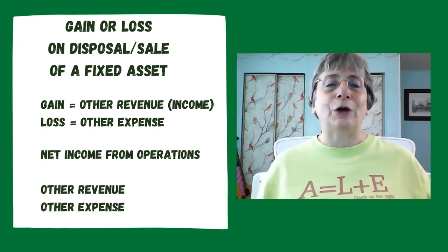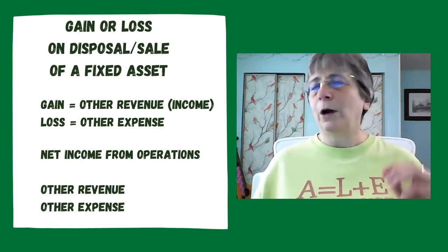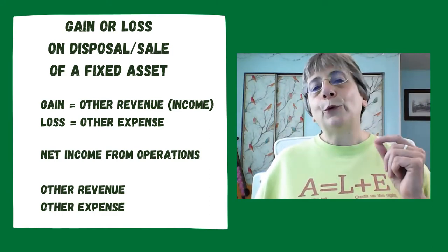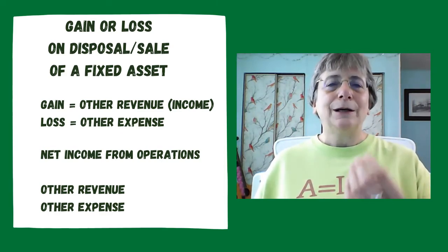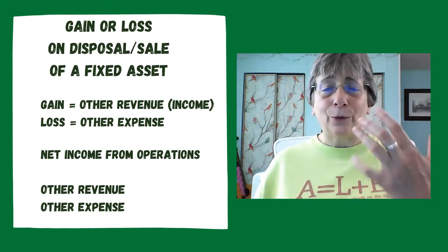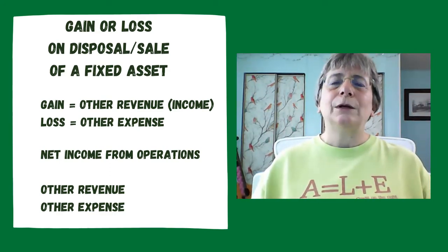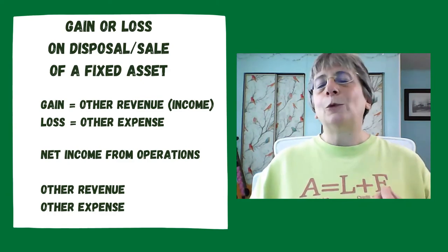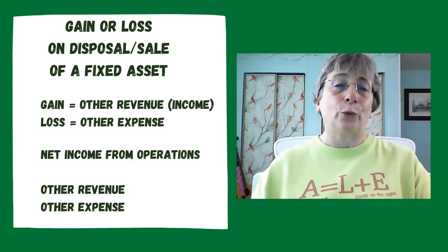New account number two is the flip side of number one. This is called loss on sale of an asset, loss on sale of a fixed asset, or loss on disposal of an asset. The account type for this is other expense. This is a specific account type in addition to the five we previously talked about: assets, liabilities, equity, revenue, expenses. Because it is an other expense, it has a normal balance that is a debit. We increase it on the debit side and decrease it on the credit side.